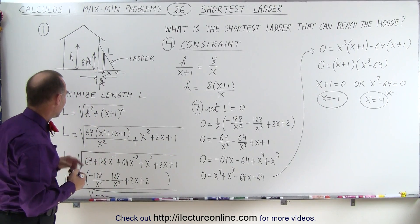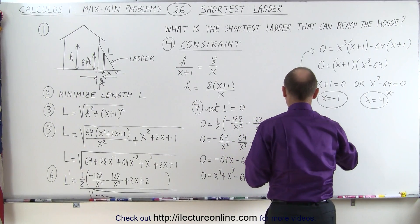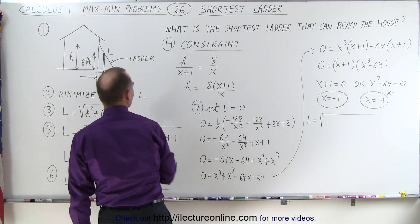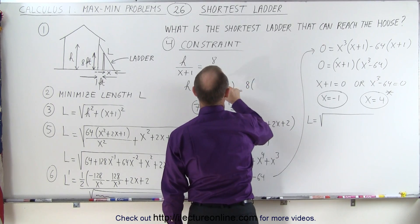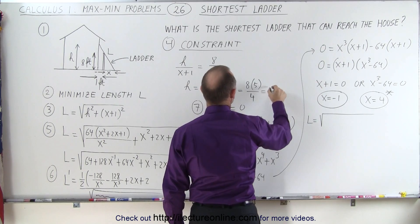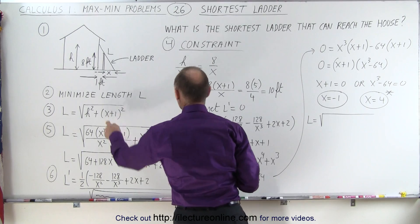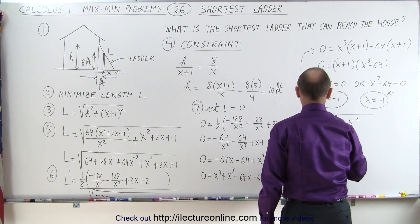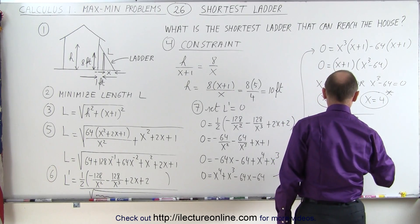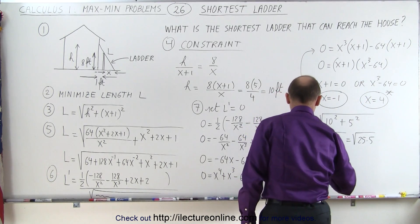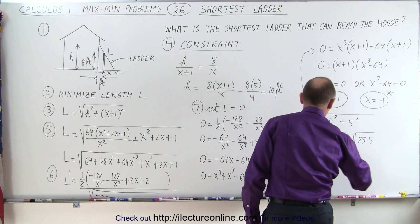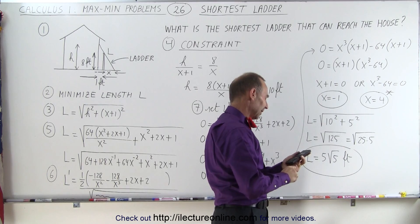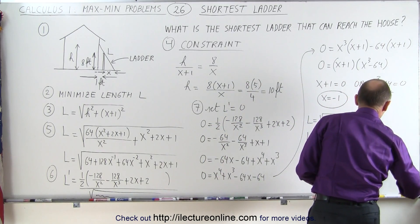Let's find the actual ladder length when x = 4. First, h equals 8 times (4 + 1) divided by 4, which is 8 × 5 / 4 = 10. So h is 10 feet. Then L equals the square root of h² + (x + 1)², which is √(10² + 5²) = √(100 + 25) = √125 = √(25 × 5) = 5√5 feet. As a decimal, the ladder would have to be about 11.18 feet to reach the house.